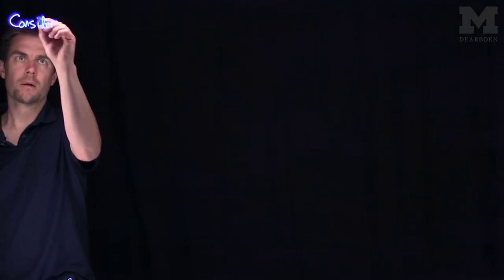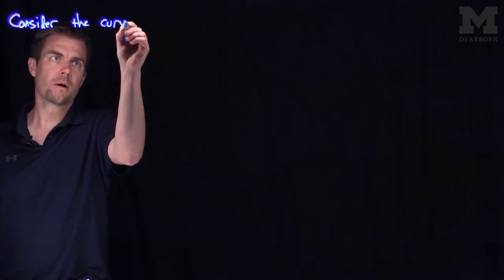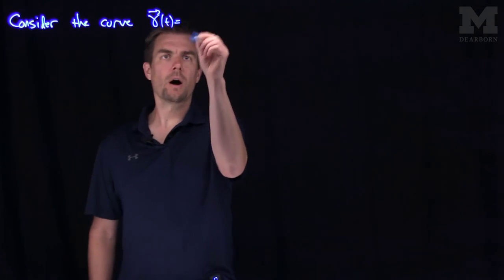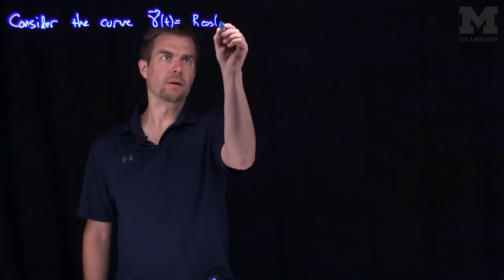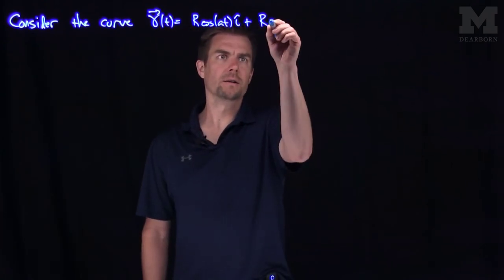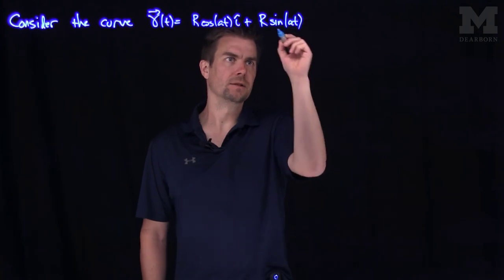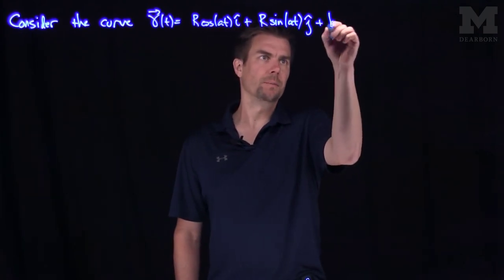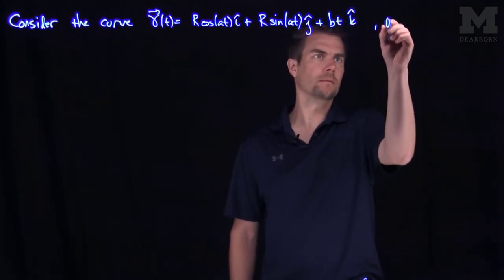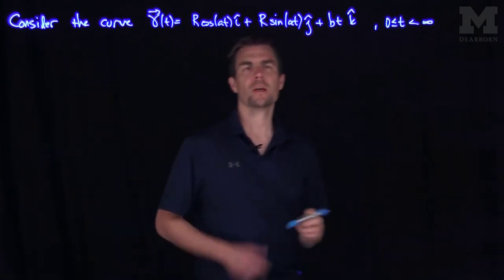Hello students. In this video, we're going to analyze a circular helix. Let's consider the curve gamma of t, which is r cosine of at î plus r sine of at ĵ plus bt k̂, for t between 0 and infinity.